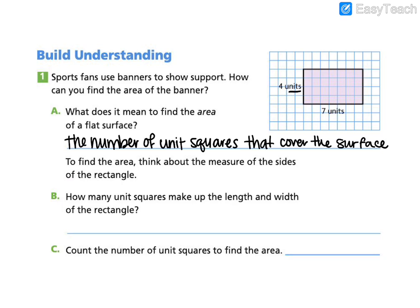Letter B asks us, how many unit squares make up the length and the width of the rectangle? The length of the rectangle is 7 units. The width of the rectangle is 4 units. So we can say length is 7 units and the width is 4 units.